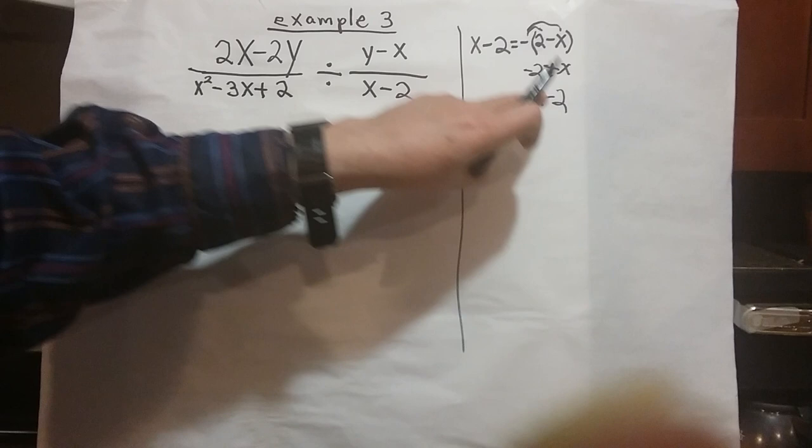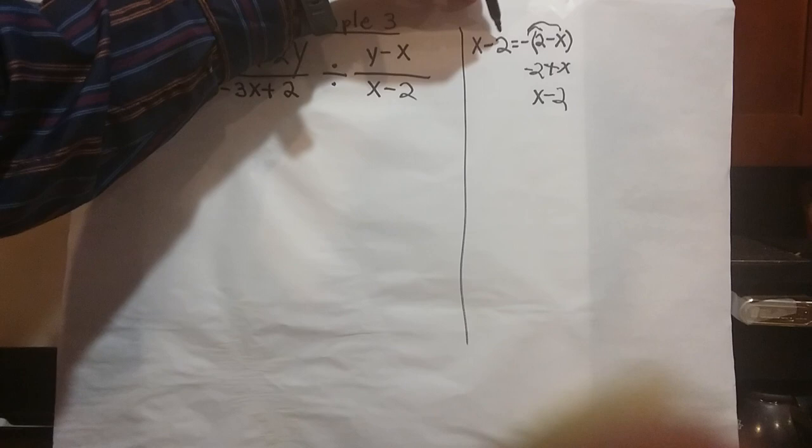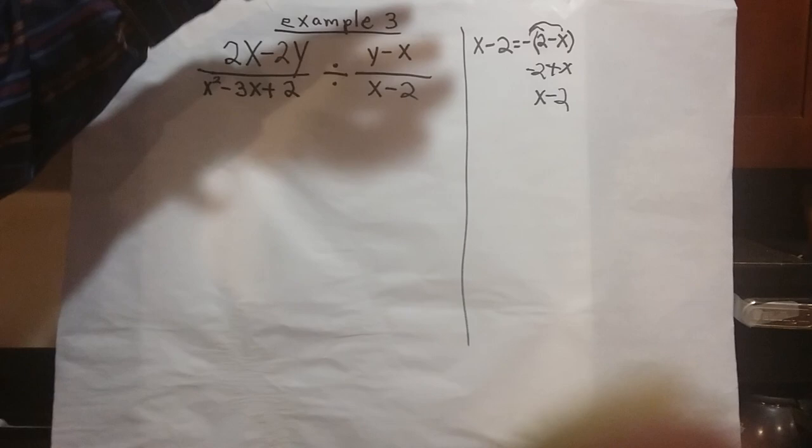Isn't this the same as the x minus 2? So the idea here is when you have a binomial, you could write a negative and then reverse the binomial, and it's exactly the same. Okay, now you'll see in a minute how that idea comes up in this problem.